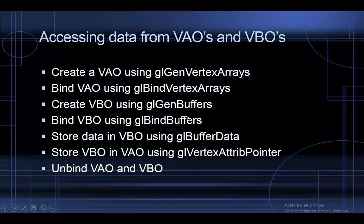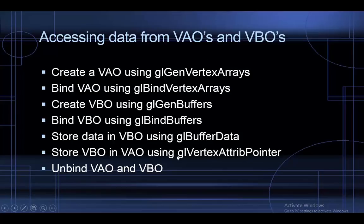Once you've got data in the VBO, store the VBO into the VAO using the glVertexAttribPointer function, which points the VBO to an attribute in the VAO. You can choose which attribute to store the VBO in — for this video we'll just use attribute zero. Once you're finished storing data, it's always time to unbind the VAOs and VBOs so that OpenGL knows you're finished with them.